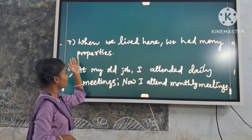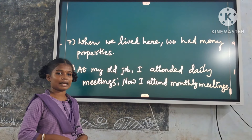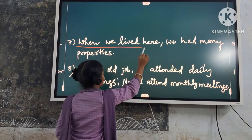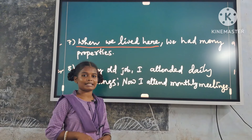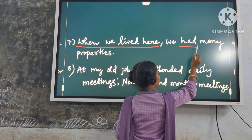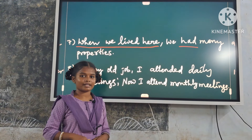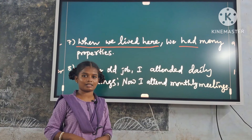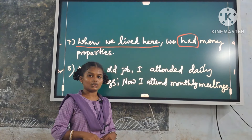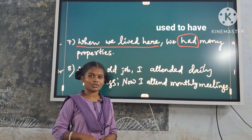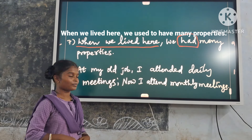Seventh example: 'When we lived here, we had many properties.' Here, 'when we lived here' is a time expression. But the verb in the main clause is a stative verb — that is, a verb of possession. So we use only 'used to'. Replace it with 'used to have'. Answer: 'When we lived here, we used to have many properties.'